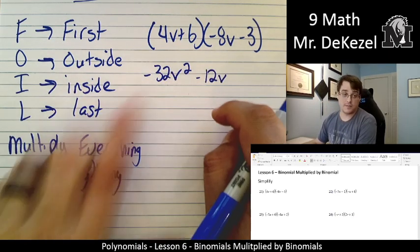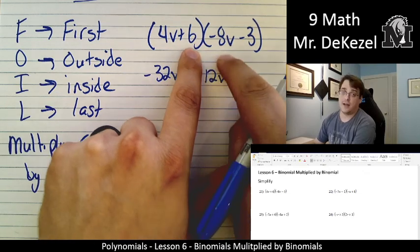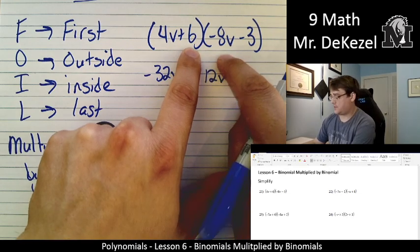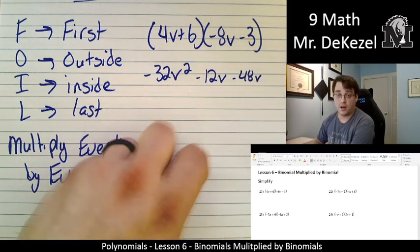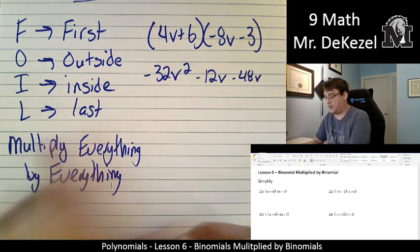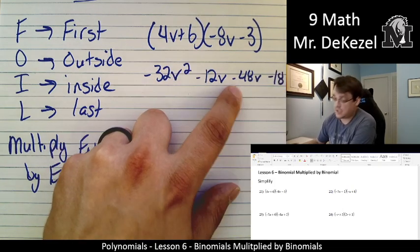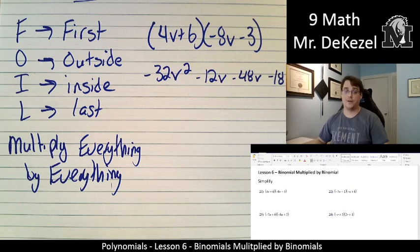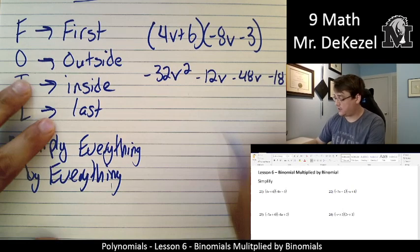Inside terms are next. I for inside. So that's 6 and -8V. So that would be -48V. We bring the V along. And then our last terms. Our last terms would be 6 and -3. That's just -18. There are no variables to bring along. And we have one last step is then to combine our like terms.